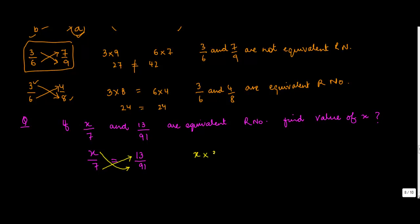We will have x into 91 equal to 13 into 7. So x into 91 equals 13 into 7. Or you can simply have x equals 13 into 7, which is 91, divided by 91. Both of them are 91 upon 91, which means x is equal to 1.